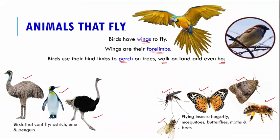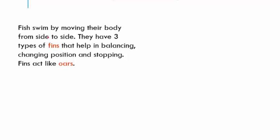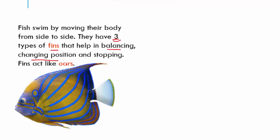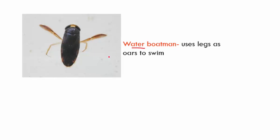Now let's look at animals that can swim. These animals have adapted their bodies to suit their aquatic habitat. Fish swim by moving their body from side to side and have three different types of fins for balancing, changing position, and stopping — these fins act like the oars of a boat. The water boatman insect has front legs modified to form an oar shape, which it beats in a circular motion to move forward.